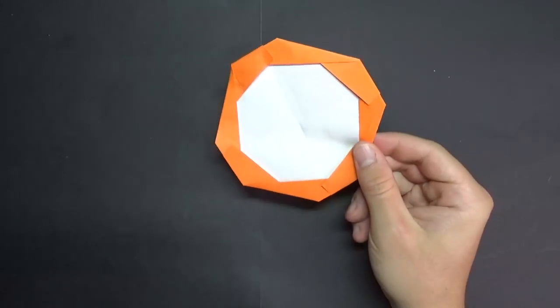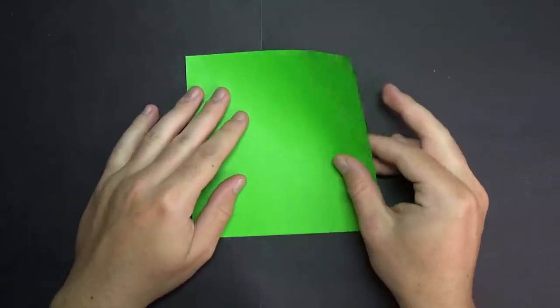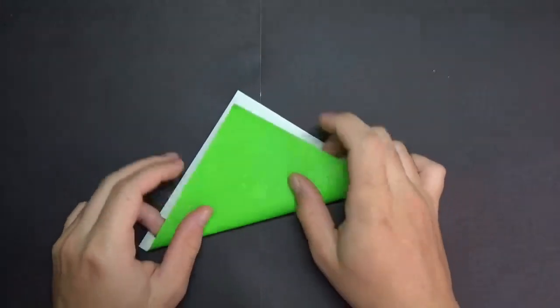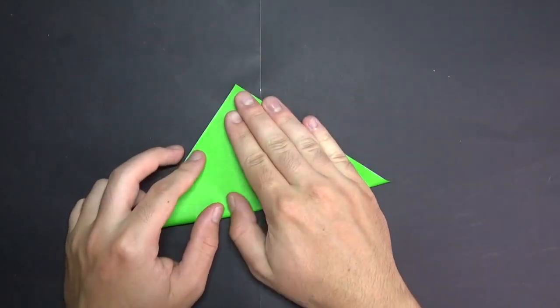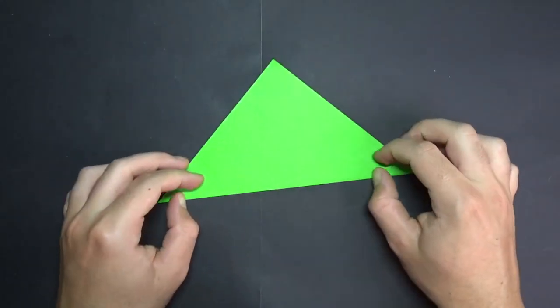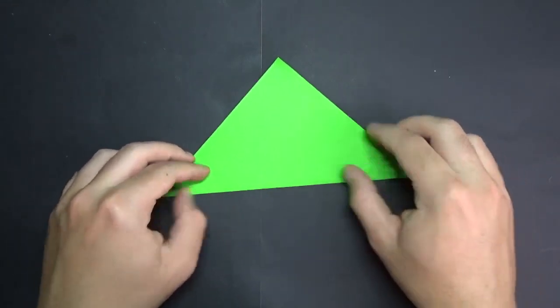Okay, so for this model, I'm going to use a 6-inch square. So let's begin with the white side up, and let's fold in half. Try to make very precise folds and crease sharply.